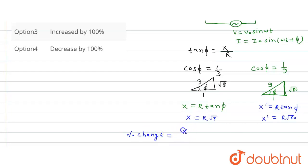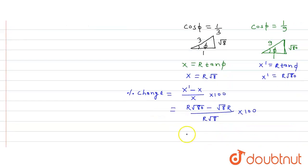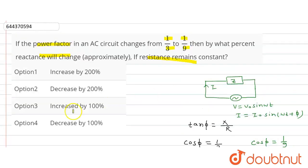Percentage change is equal to X dash minus X upon X into 100. So this is equal to R into under root of 80 minus under root of 8, all divided by R into under root of 8, times 100. This is almost equal to 200 percent of the change.